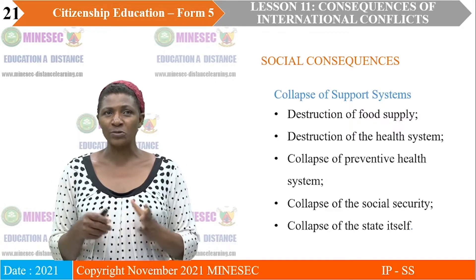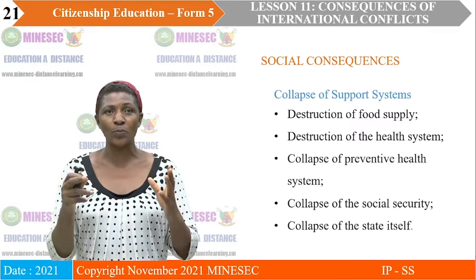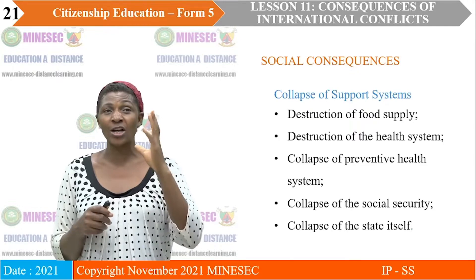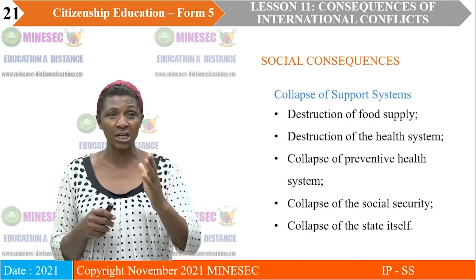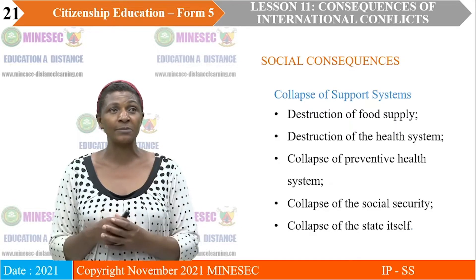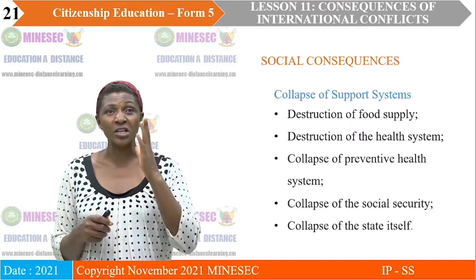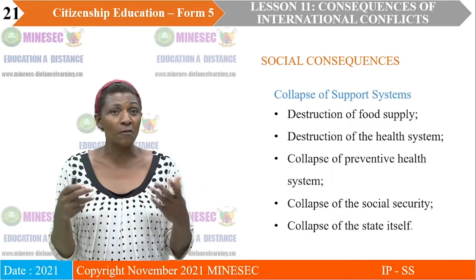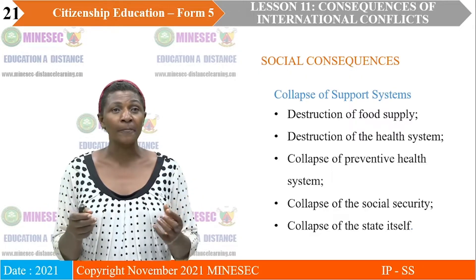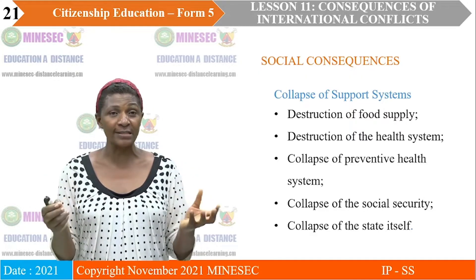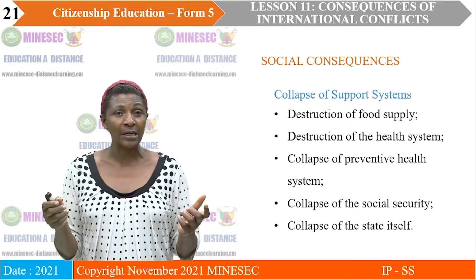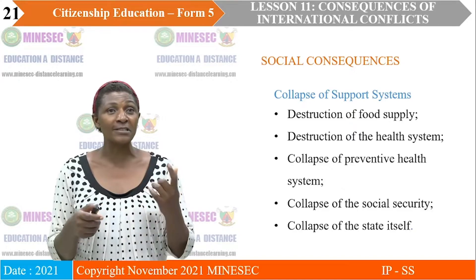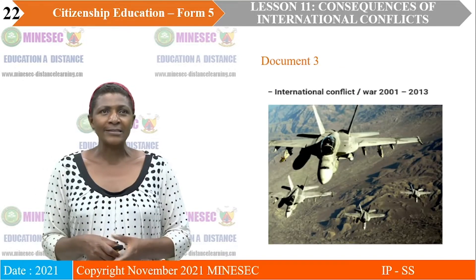Another social consequence is the collapse of support systems. This includes the destruction of food supply, the destruction of the health system — hospitals, lack of medication, collapse of preventive health — and the collapse of social security, meaning retirement benefits and family allowances. Ultimately, it can lead to the collapse of the state itself.